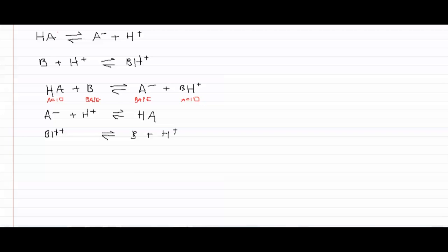So we actually end up with two pairs. HA and A- as one pair and B and BH+ as the other pair. And these are the two acid base conjugate pairs. So we have HA and A- as one conjugate acid base pair.